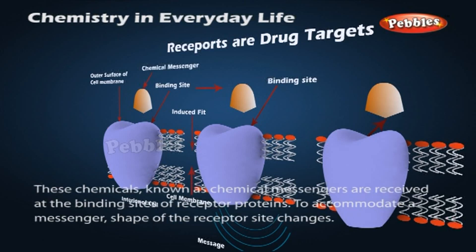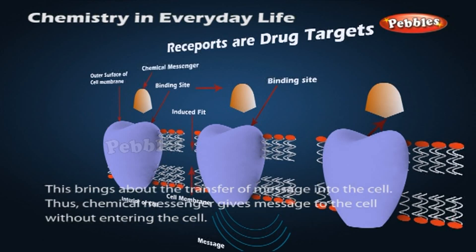These chemicals, known as chemical messengers, are received at the binding sites of receptor proteins. To accommodate a messenger, the shape of the receptor site changes. This brings about the transfer of the message into the cell. Thus, chemical messenger.